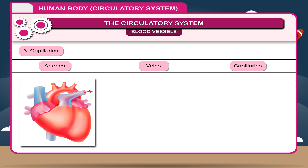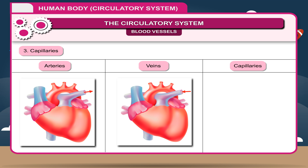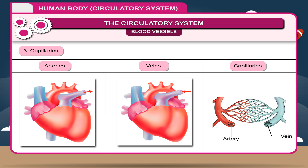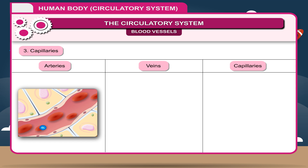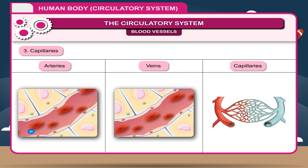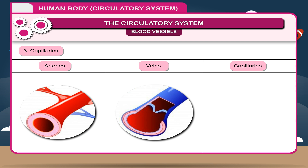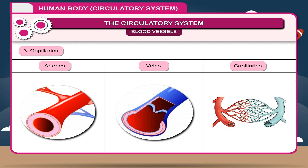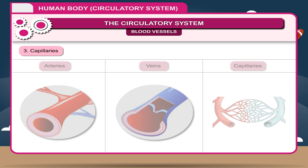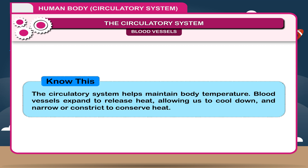Differences between blood vessels — arteries, veins, and capillaries: Arteries carry blood from the heart to other organs and body parts; veins bring blood back to the heart; capillaries carry blood from arteries to veins. Arteries carry oxygenated blood; veins carry deoxygenated blood; capillaries carry both. Arteries have thick muscular walls with no valves; veins have thick muscular walls with valves; capillaries are very thin, made up of a single layer, with no valves. The circulatory system also helps maintain body temperature — blood vessels expand to release heat, allowing us to cool down, and narrow or constrict to conserve heat.